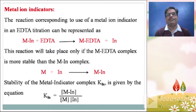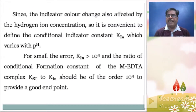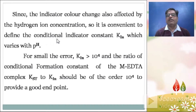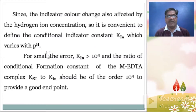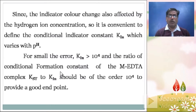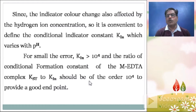Since the indicator color change is also affected by hydrogen ion concentration, that is pH, it is convenient to define the conditional indicator constant KIN, which varies with pH. For small error, KIN must be greater than 10 raised to 4, and the ratio of the conditional formation constant of the metal EDTA complex KST to KAIN should be of the order 10 raised to 4 to provide a good end point.